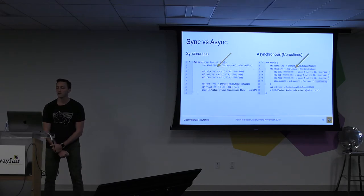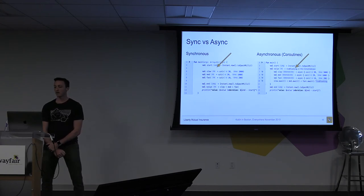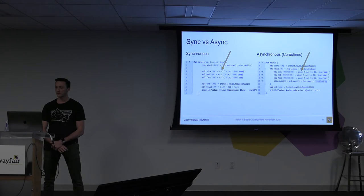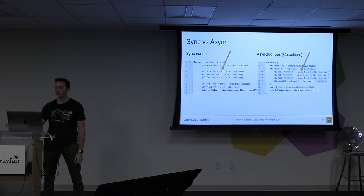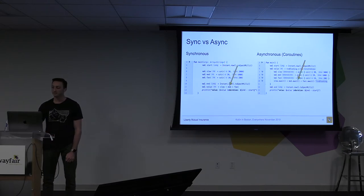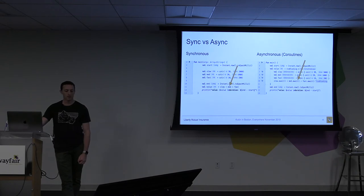Here's a before and after. All we've done is added our runBlocking block, converted our calc functions into suspending functions, wrapped them in an async call, and now we're just awaiting. Now that we have this done, we've got to make sure our code is actually testable, so I'll dive into some unit testing.